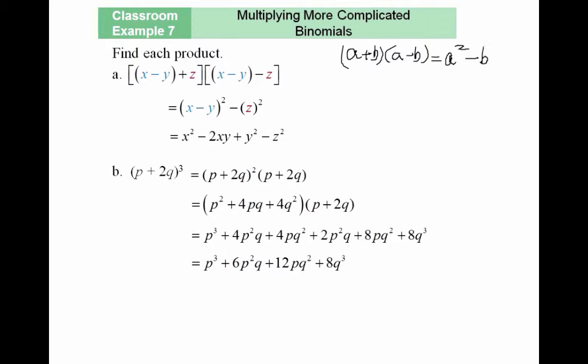Recall that a plus b times a minus b equals a squared minus b squared, because the two middle terms add up to zero — you get ab minus ab, which is zero. So here, my a is the expression x minus y, and my b is z. I can apply this formula directly.